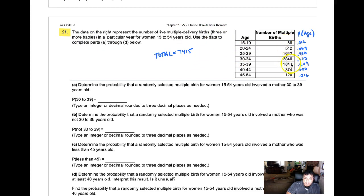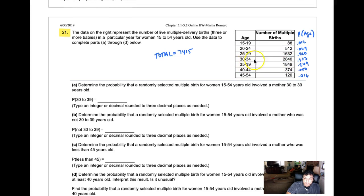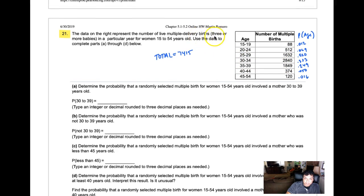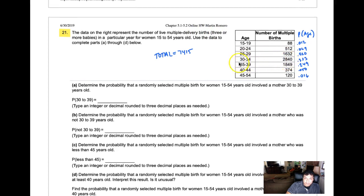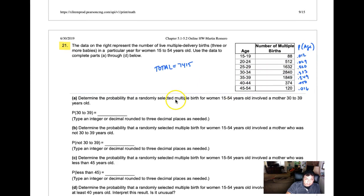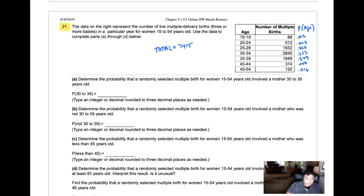You can see the highest number of people who have multiple delivery births, three or more babies or triplets or more, is those who are between 30 and 34. You can see this breakdown here, so from here we can answer these probability questions.